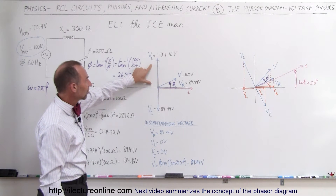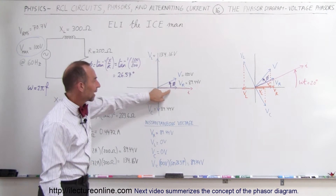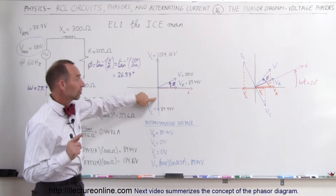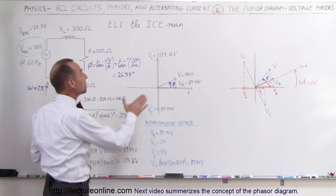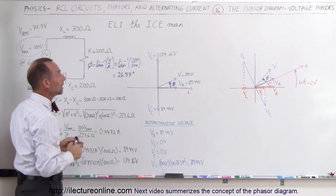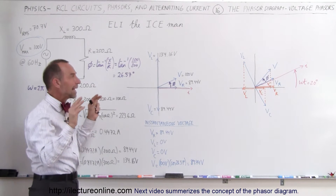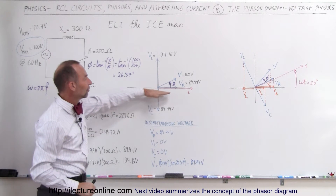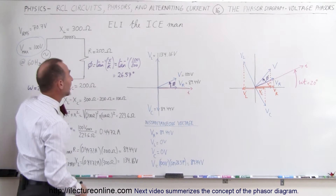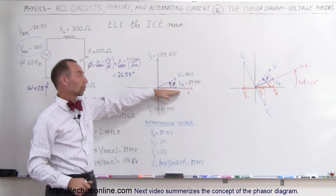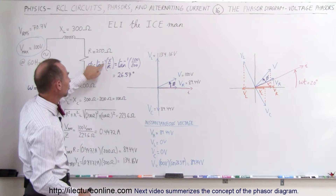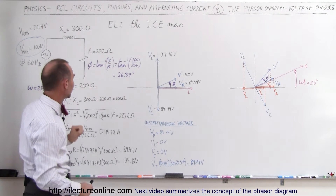Notice the voltage across the inductor comes first, 90 degrees behind that is the voltage across the resistor, and 90 degrees behind that is the voltage across the capacitor. But since the inductor reactance is the largest of the three, it tends to lean towards being an inductive circuit, and so the voltage of the whole circuit V, which is 100 volts max, is ahead of the current in the circuit by the phase angle phi.